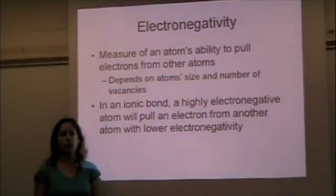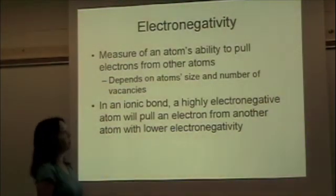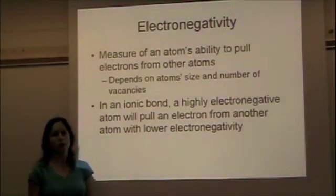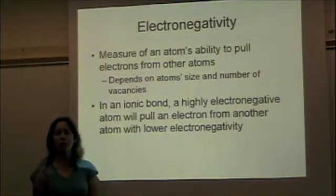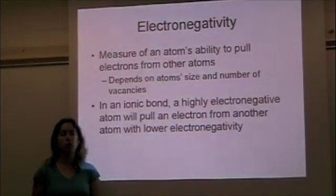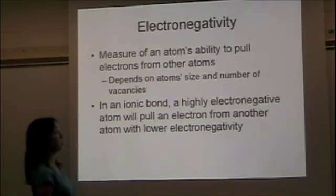When we talk about ionic bonds, we also talk about electronegativity. This is a measure of an atom's ability to pull electrons from another atom. This has to do with how many electrons it has in the outer shell, and it also has to do with how many protons it has in the nucleus, because the electrons are very attractive to the positive protons.